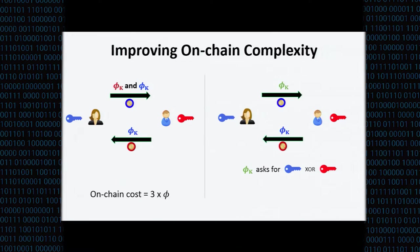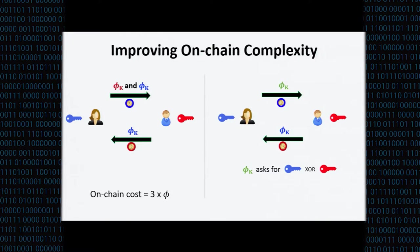We can improve scalability further using an XOR trick. Instead of Alice asking Bob for both keys, Alice asks Bob for the XOR of the blue key and the red key. This is sufficient for Alice to retrieve the red key, since she already knows the blue key — XORing the two reveals the red key. Bob can only compute this XOR once Alice tells him the blue key. This protocol is still correct and private, but the on-chain cost is lower — only two verifications instead of three.